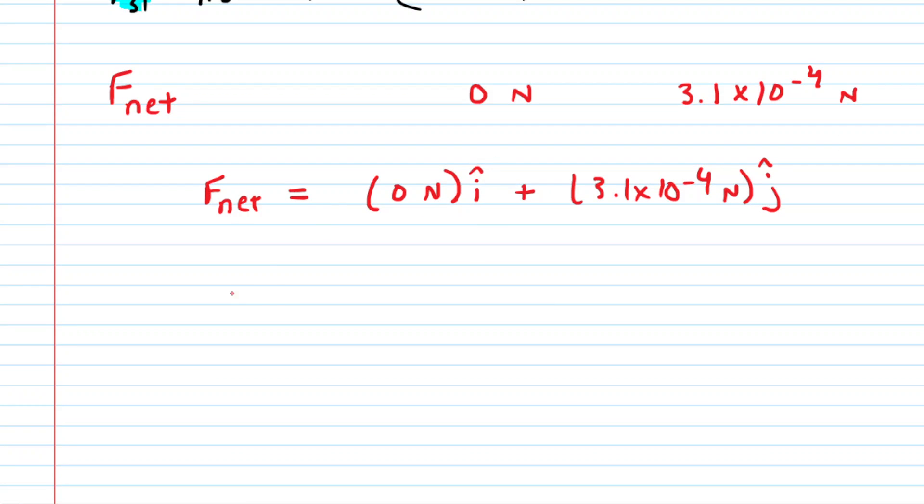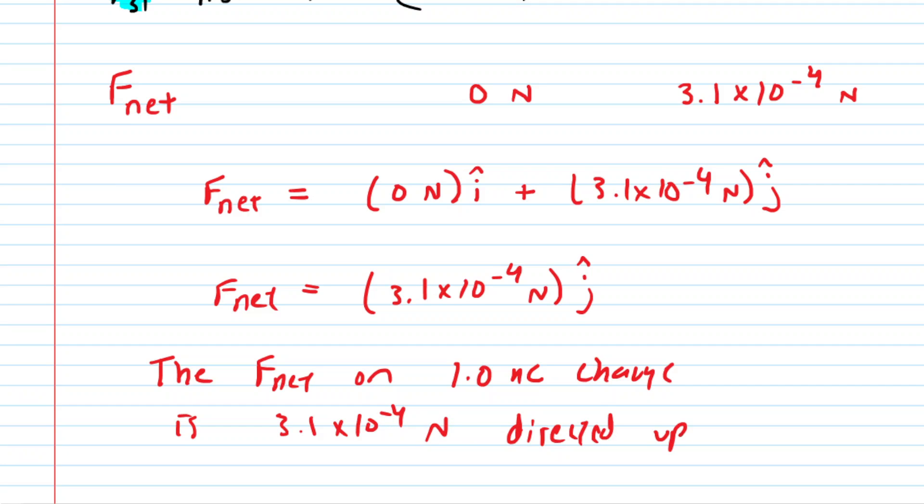Zero newtons is kind of negligible, so you could also simply express your final answer with just the y component. A third way of expressing the answer would be to simply say that the net force on the one nanocoulomb charge is 3.1 times 10 to the minus 4 newtons, and then you can simply say directed upward. Notice it's upward because the net force was acting in the y direction, as labeled by j hat, and it was positive. So that's why we're saying it's directed upward.